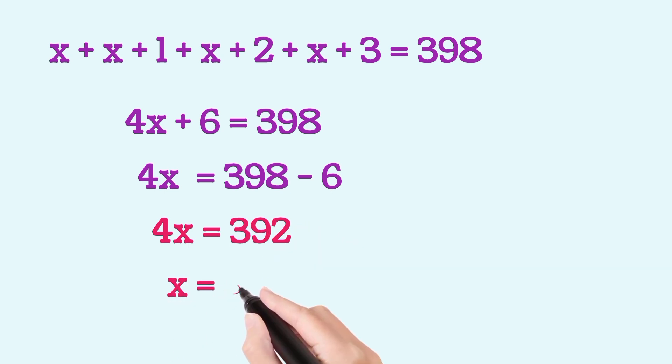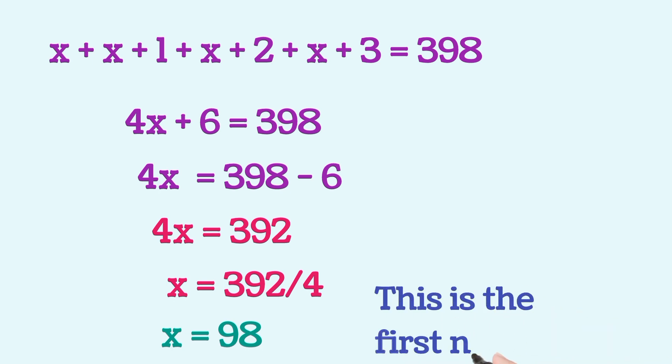Or this on solving will give x is equal to 392 divided by 4 which is x is equal to 98. So, this is the first number.